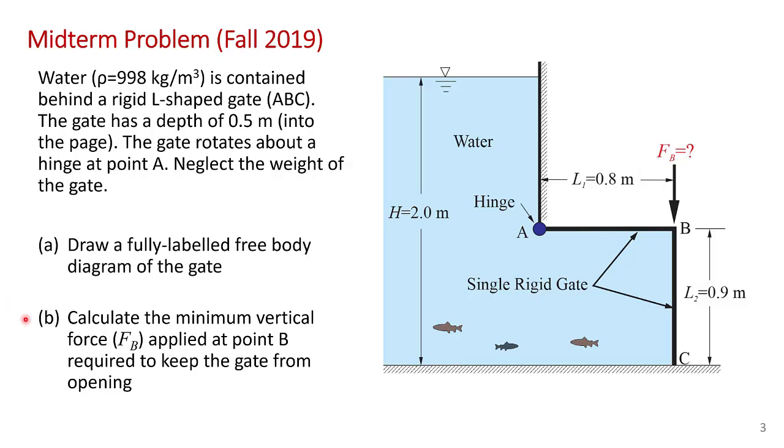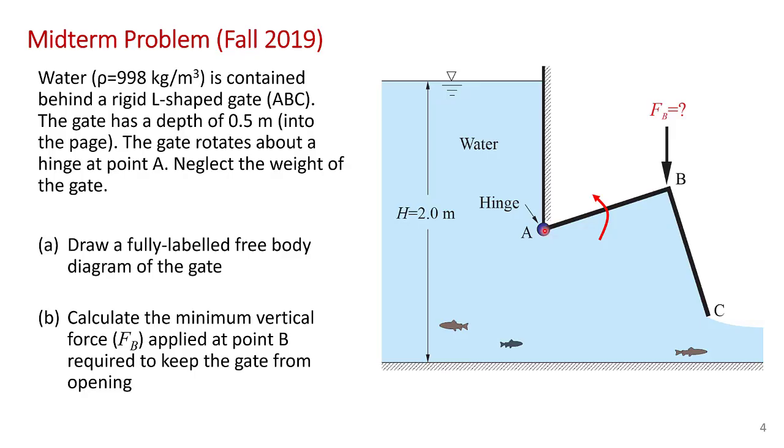Then in part B, we have to calculate the minimum vertical force applied over here at point B to keep the gate from swinging open. Just to be a hundred percent clear, the gate ABC is one rigid part and rotates about the hinge at point A. So this is what we're trying to prevent with the vertical force at point B.